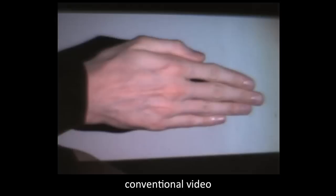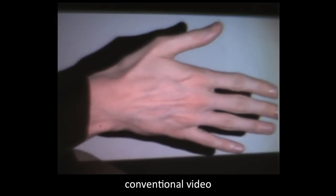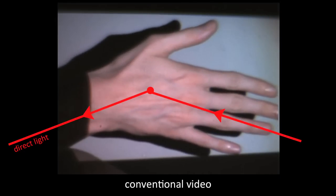A conventional video camera records all light, including the direct light reflecting off the surface of the skin and the indirect light that scatters underneath.